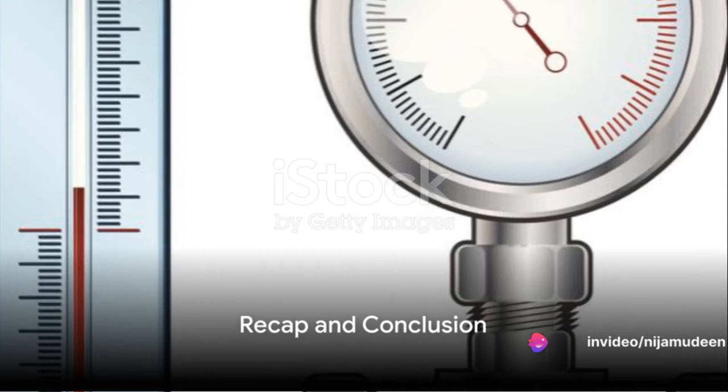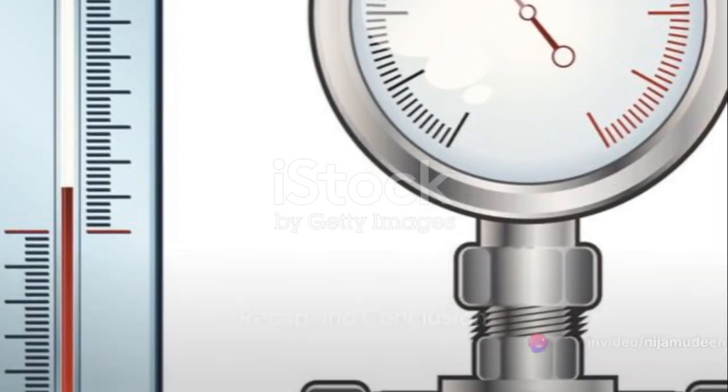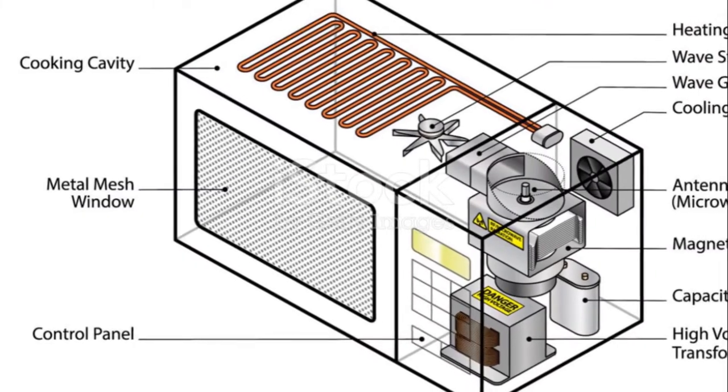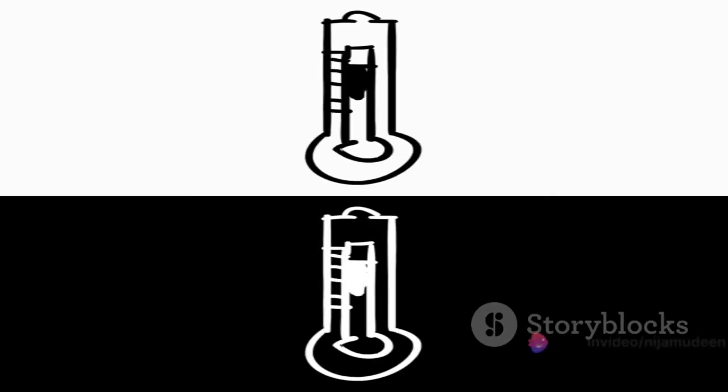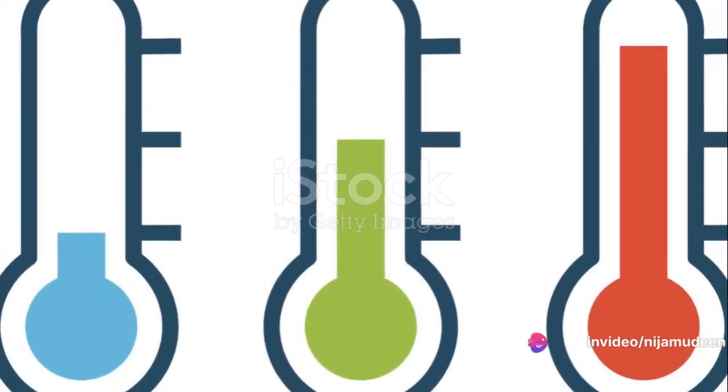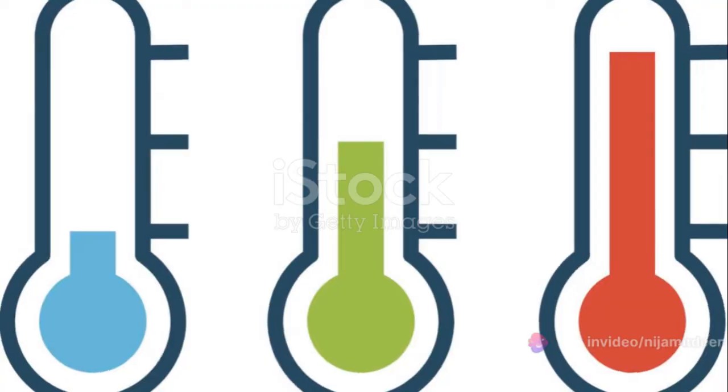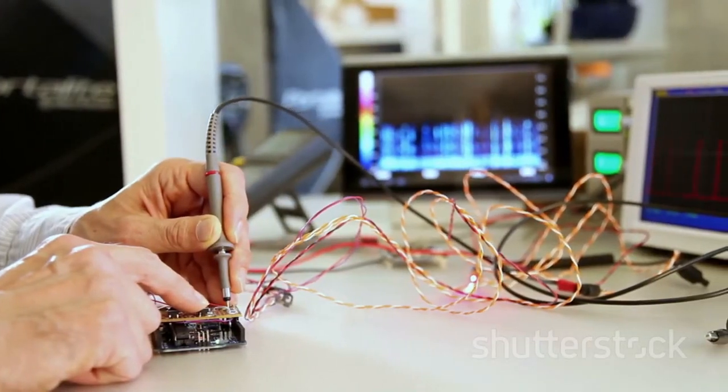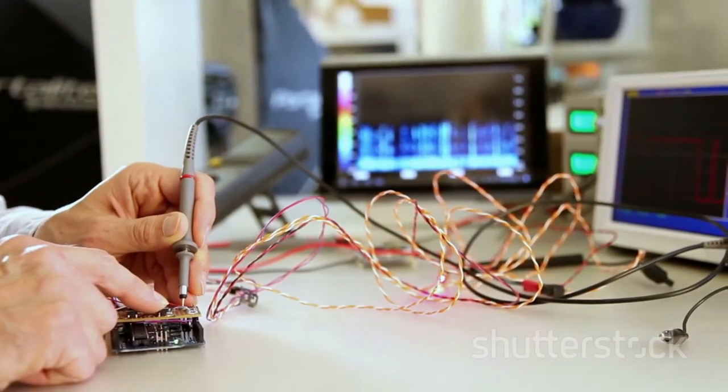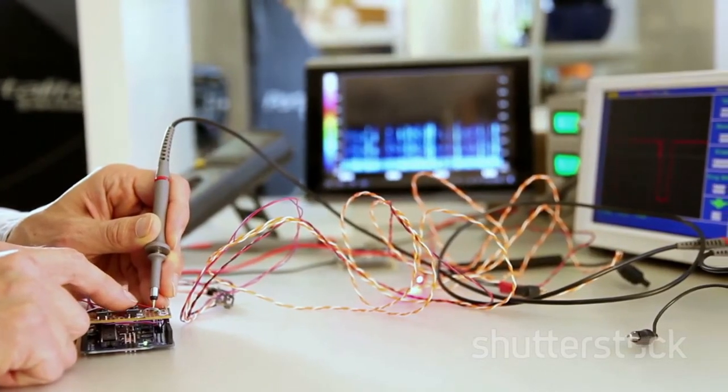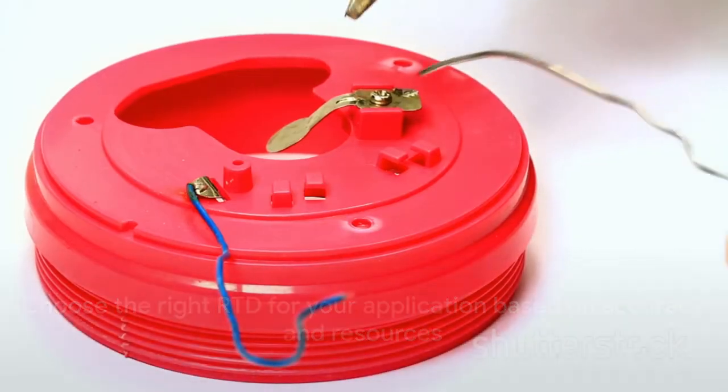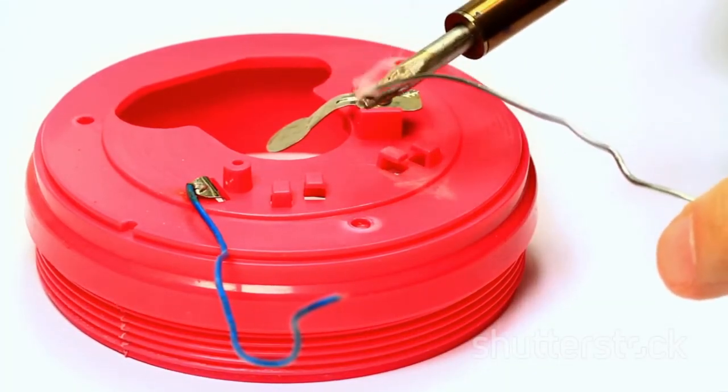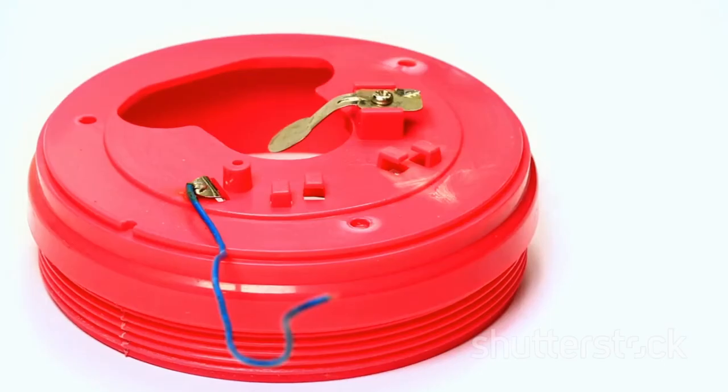Let's sum up what we've learned about RTDs. Two-wire RTDs are simple and cost-effective, but they can be less accurate due to lead wire resistance. Three-wire RTDs add an extra wire to help compensate for this resistance, improving accuracy. But they require the wires to have identical resistances. Four-wire RTDs offer the highest accuracy by eliminating the resistance of the lead wires from the equation entirely. So, depending on the level of accuracy you need, and the resources at your disposal, you can choose the right type of RTD for your application. Thanks for watching.